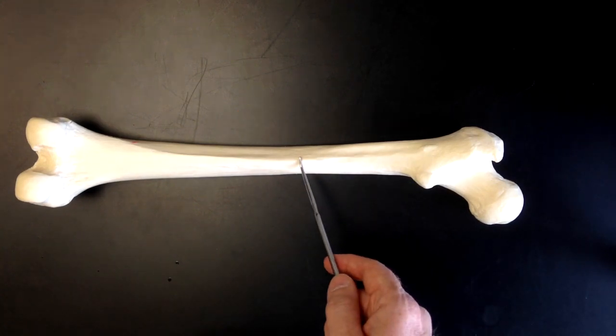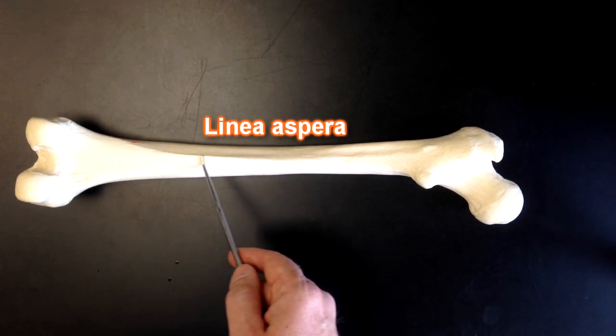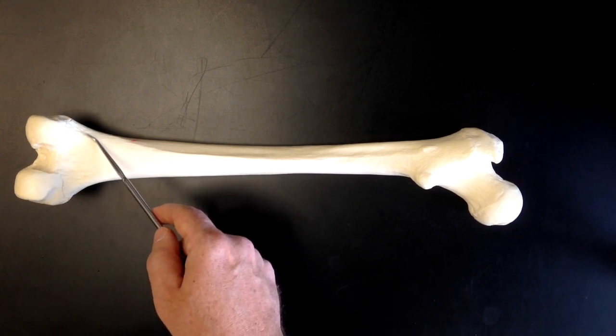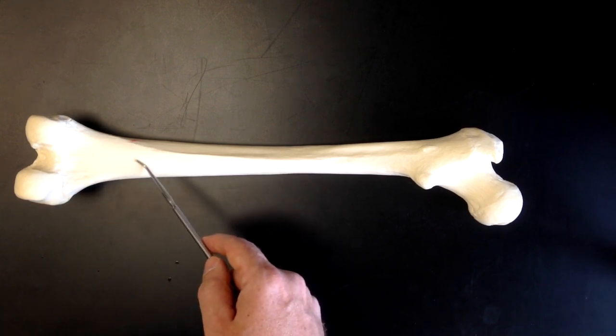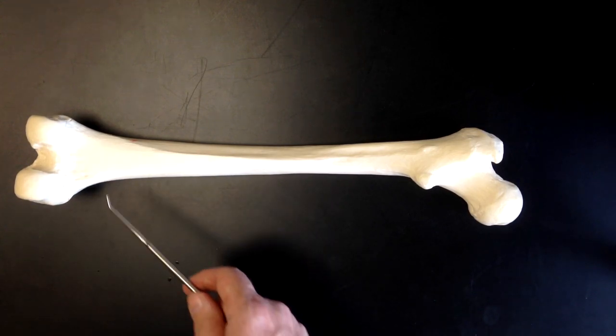That leads into the linea aspera which we can see down here. And then we can see the linea aspera splits like so and forms this smooth surface. This smooth surface would be located posterior or on the back of the knee.